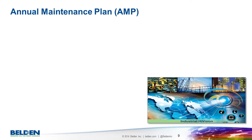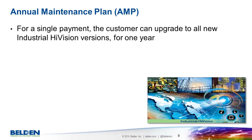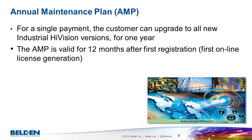Industrial HiVision is a product that, to a large extent, has been designed by its users. Our customers constantly come up with great new ideas and we implement them. As a result, we normally release one new major version a year and one or more minor versions. We offer an annual maintenance plan, which we call an AMP. For a single payment, the AMP allows you to get all new versions of Industrial HiVision released within a year. The 12-month clock does not begin counting down until the AMP is first used to generate a license for a new version.